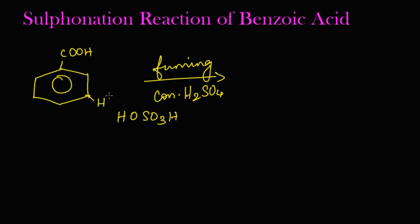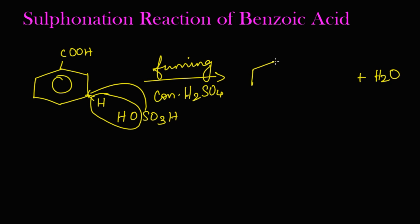When benzoic acid reacts with fuming concentrated sulfuric acid, the hydrogen from benzoic acid and the OH from sulfuric acid are eliminated as a water molecule (H₂O). The remaining SO₃H group replaces the hydrogen in the meta position, giving us meta-sulfobenzoic acid, with COOH and SO₃H attached at the meta position.